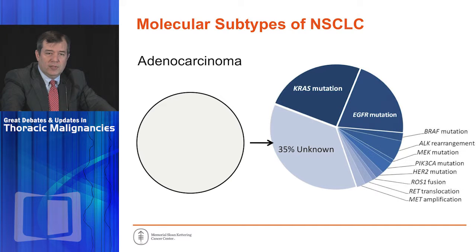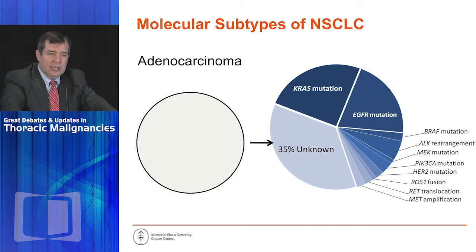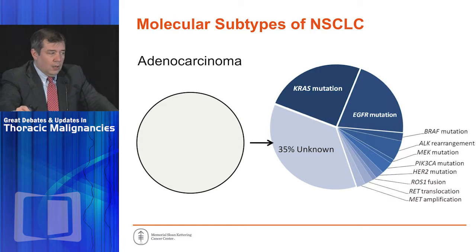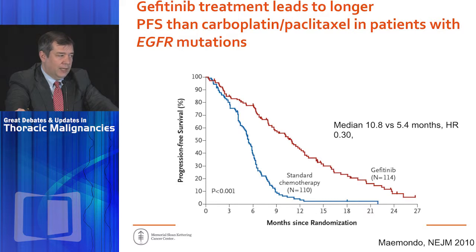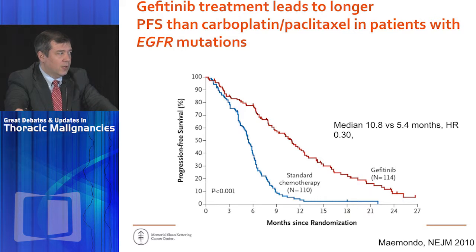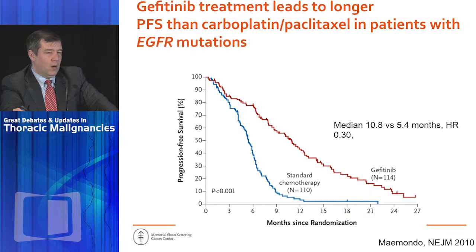We think of lung cancer in 2015 as a disease of subtypes. The adenocarcinoma pie chart shows about a quarter of patients have KRAS mutant lung cancer, a little less than a quarter have EGFR mutant lung cancer, and then there are slivers — BRAF mutant, ALK positive, ROS1 positive, and many others. We treat these as distinct disease subsets because of our experience with EGFR mutant lung cancer, where EGFR tyrosine kinase inhibitors produce dramatic improvements in progression-free survival compared to platinum-based doublets. This is how we think of lung cancer today and how we're designing trials.